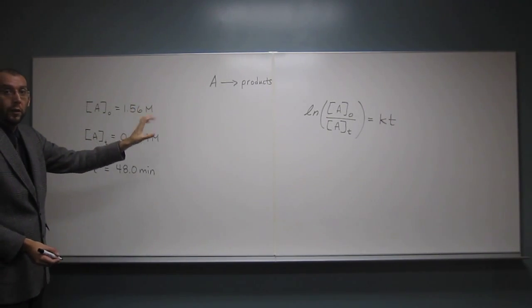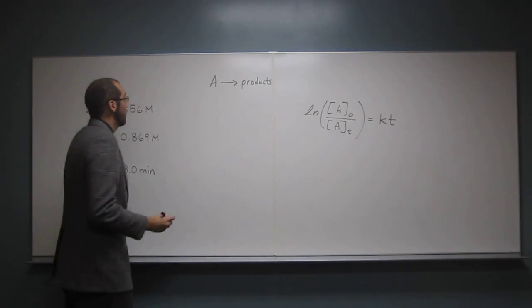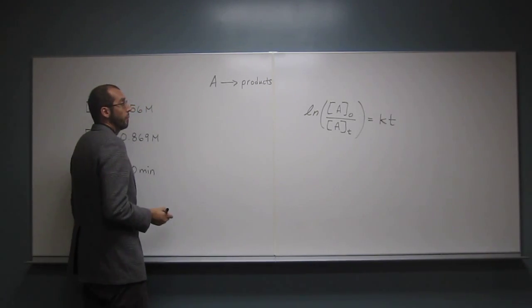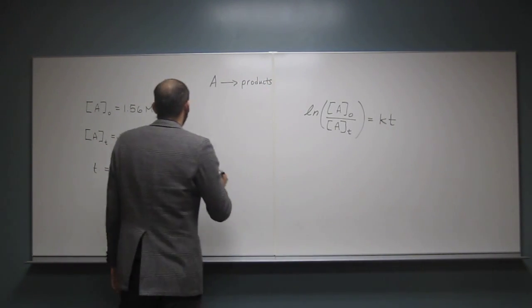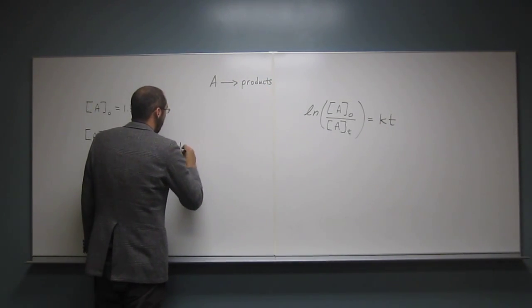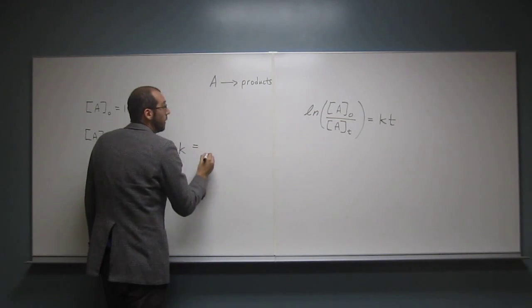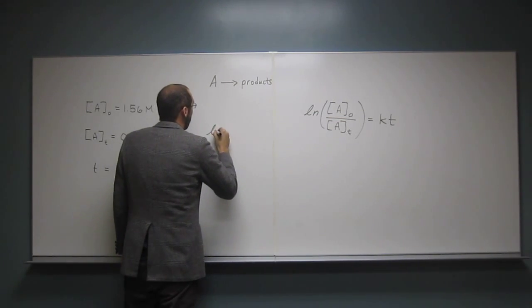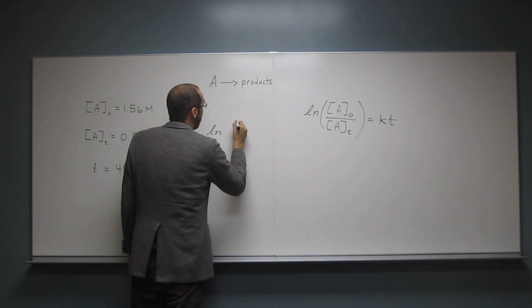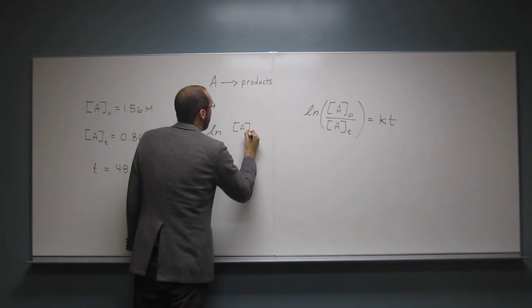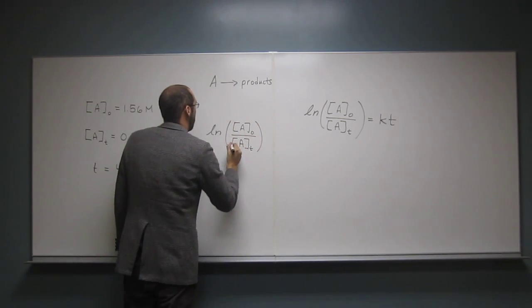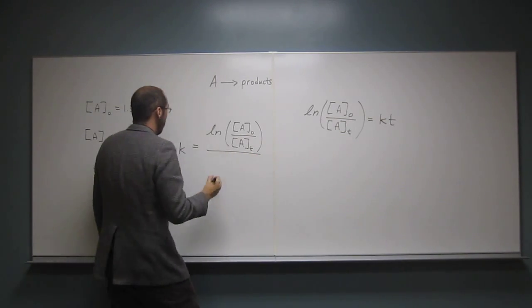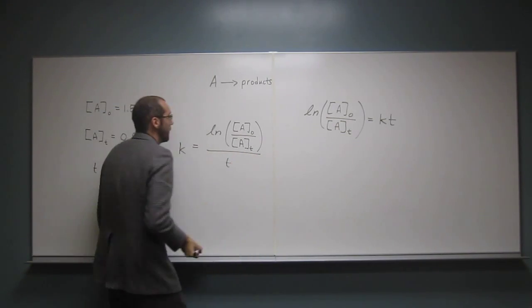All we need to do is rearrange that equation and then plug and check. I'm going to isolate the variable K here. So K equals ln of A naught divided by A at time T, and we're going to divide all of that by T.